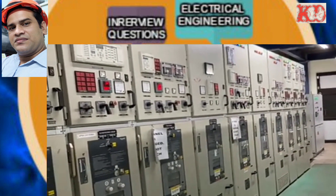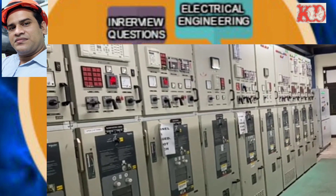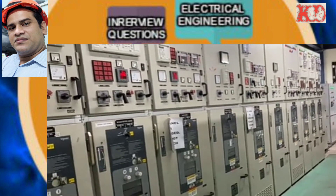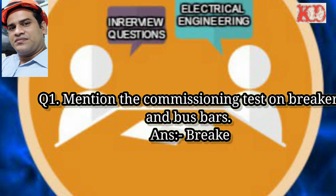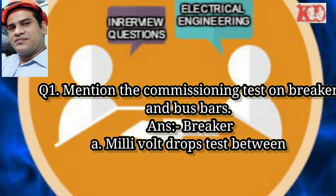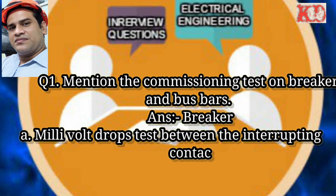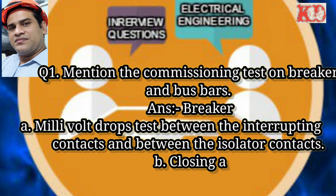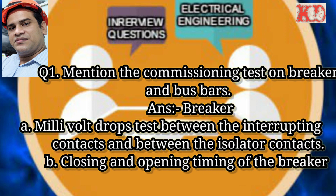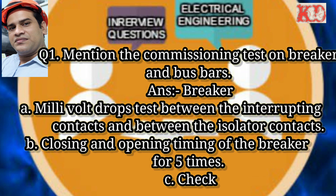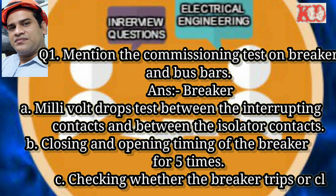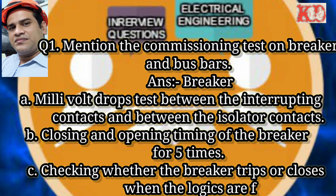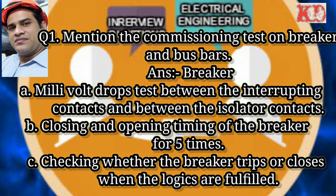Question number one: mention the commissioning tests on breaker and bus bars. Answer — for breaker commissioning, keep in mind: first, millivolt drop test between the interrupting contacts and between the isolated contacts; second, closing and opening timing of the breaker for five times; third, checking whether the breaker trips or closes when the logics are fulfilled.